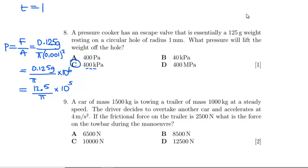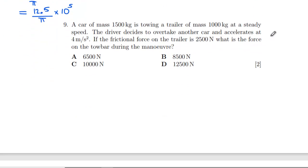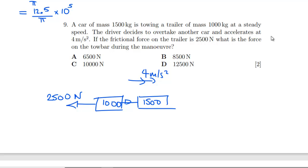The last question: car of mass 1500 kg towing a trailer of mass 1000 kg at steady speed. The driver decides to overtake another car and accelerates at 4 m/s². Frictional force on the trailer is 2500N. What is the force on the tow bar? We don't care about the car. We're just doing F equals ma, so T minus 2500 equals the mass of the trailer multiplied by 4, so T has got to be equal to 6500 newtons, which is A.